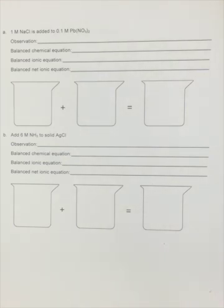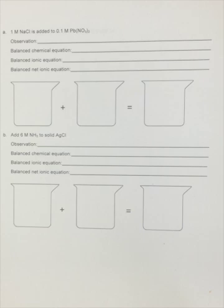We're going to get started with the pre-lab assignment for the qualitative analysis of cations experiment. I have here some equations that are similar to but different from the equations on your actual pre-lab. I'm going to show you one precipitation reaction, one complex ion formation reaction, and one redox reaction, so you can get an idea of what your answers would look like for those different types of reactions.